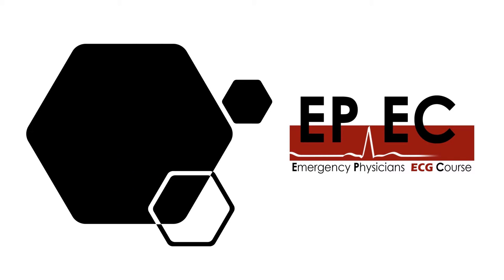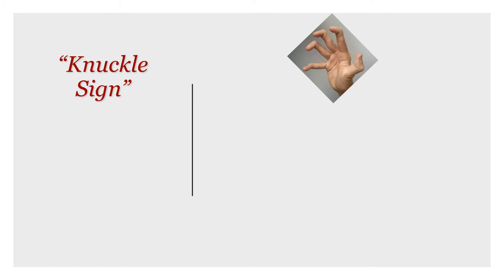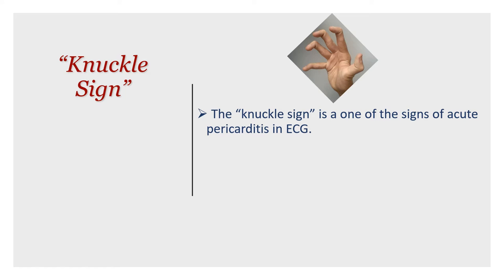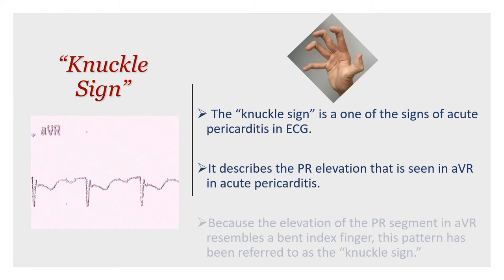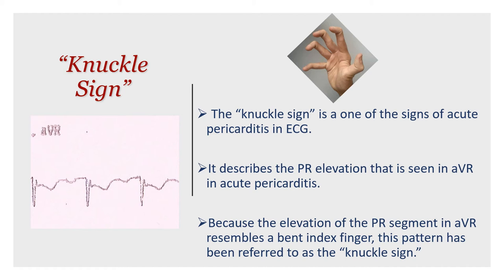Let's move on and talk about the knuckle sign. This is one of the signs of acute pericarditis on the ECG, and it describes the PR elevation seen in the AVR lead. If you focus on the way the PR is elevated, you'll notice it looks like a bent index finger. Our baseline is the TP segment, and in AVR you'll notice PR elevation and ST depression, where the PR elevation resembles a bent knuckle — that's why it's called the knuckle sign.